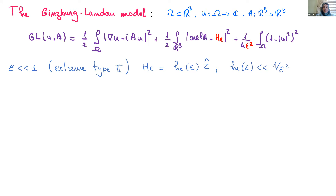We're going to take epsilon to be much smaller than 1 — so extreme type 2. The applied magnetic field will be a constant in the vertical direction, and its strength will depend on epsilon. I wrote that it should be much smaller than 1 over epsilon squared, because that's the so-called Abrikosov regime. But in fact it will be much smaller, because we're studying the onset of superconductivity, for which the applied field is of the order of log epsilon — absolute value of log epsilon, of course.